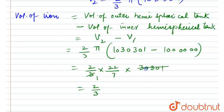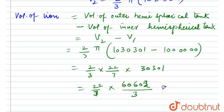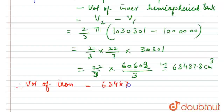Calculating: (2 × 22 × 30301) / (3 × 7) = (22/7) × (60602/3) ≈ 63487.8 cm³. Therefore, the volume of iron = 63487.8 cm³. Thank you.